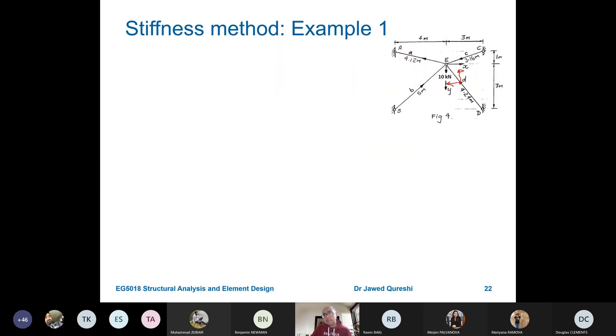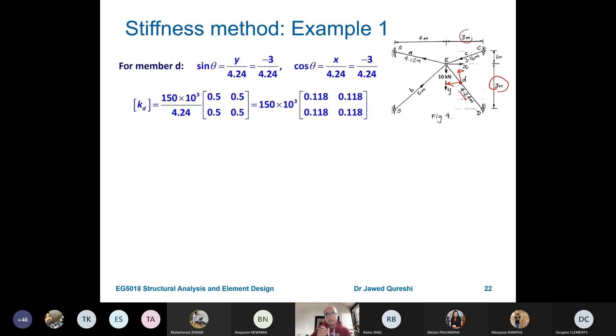Remember D. X will be negative and y will be negative as well. Sine theta will be 3 over hypotenuse, 4.24. Cos theta will be 3 over hypotenuse and that will be negative as well. And once you have these values, simply AE over L. L is 4.34. Cos square theta, square of this value, 3 over 4.24. The multiplication of sine and cos that is 0.5 sine square theta at the end.